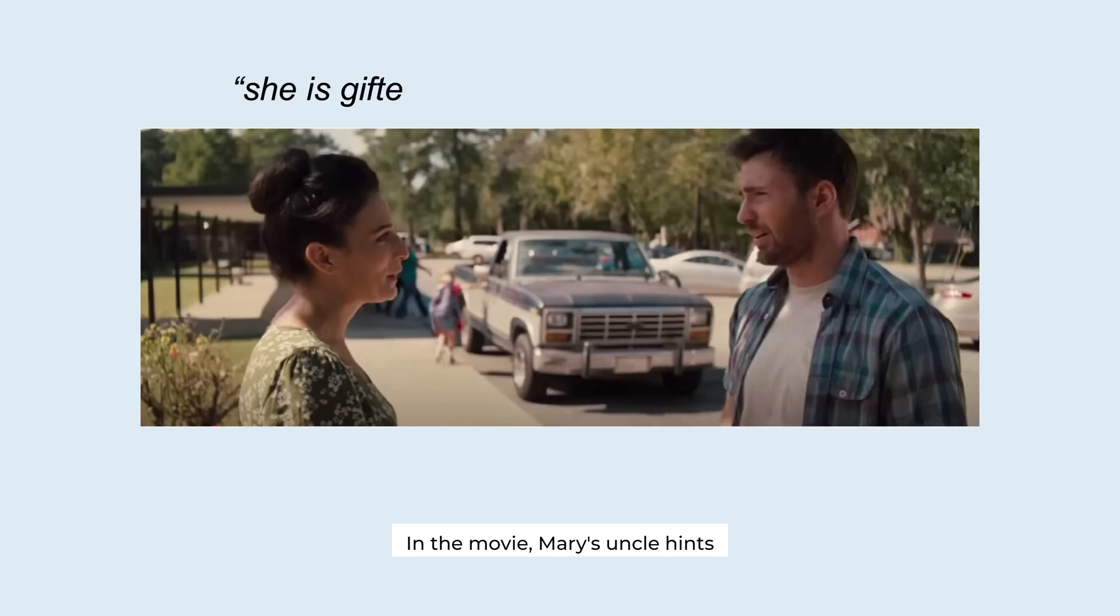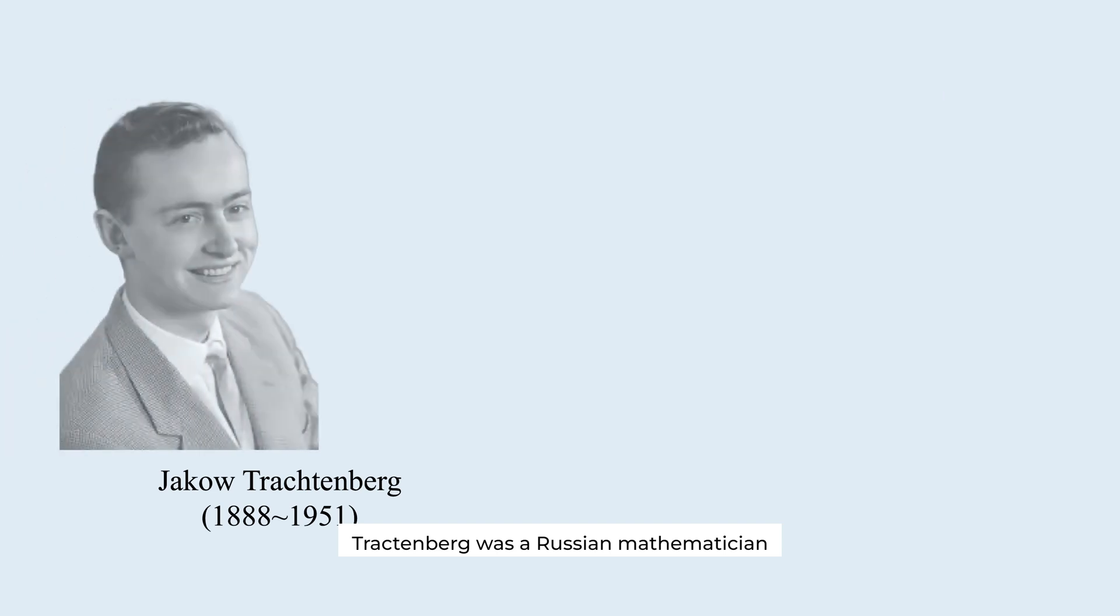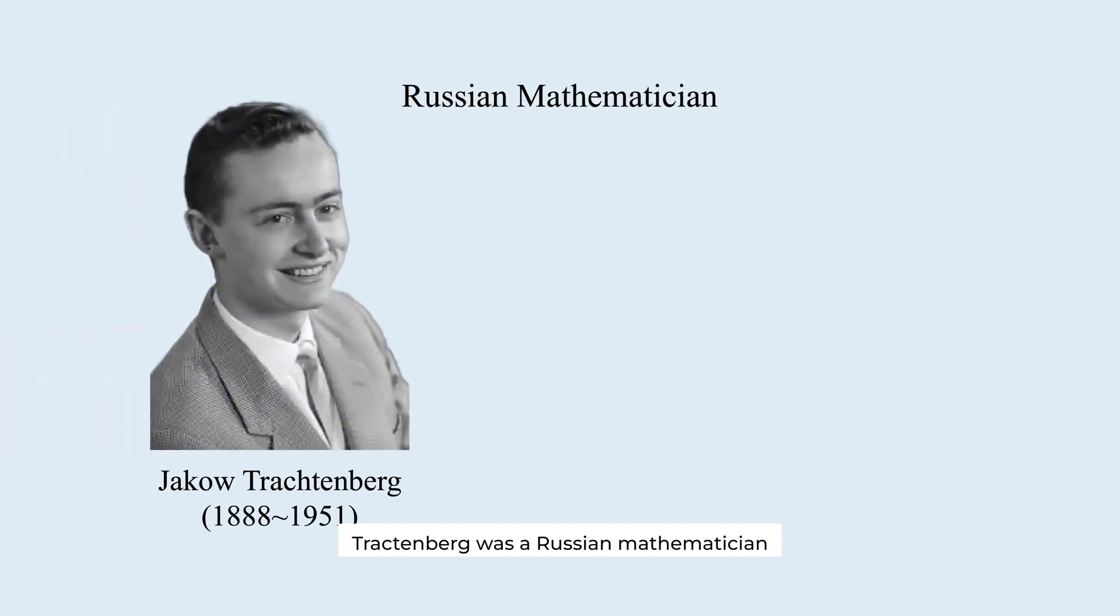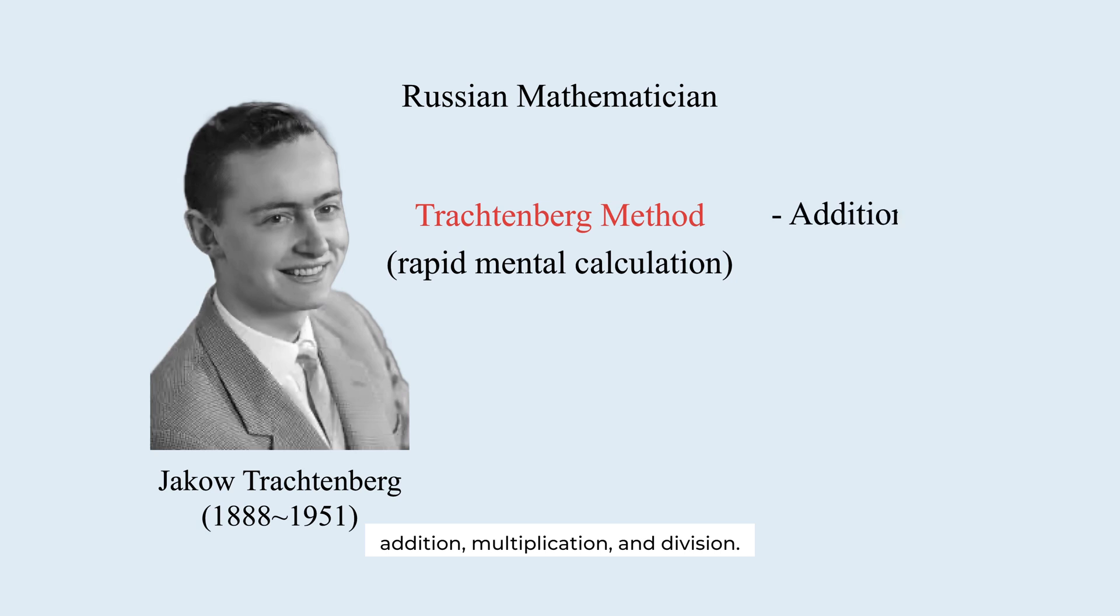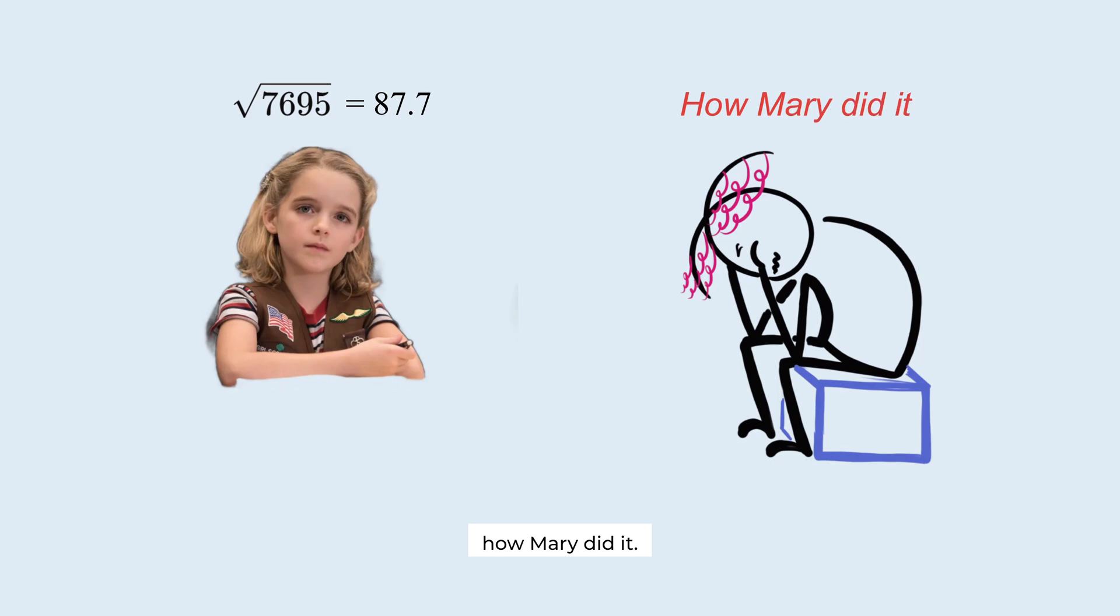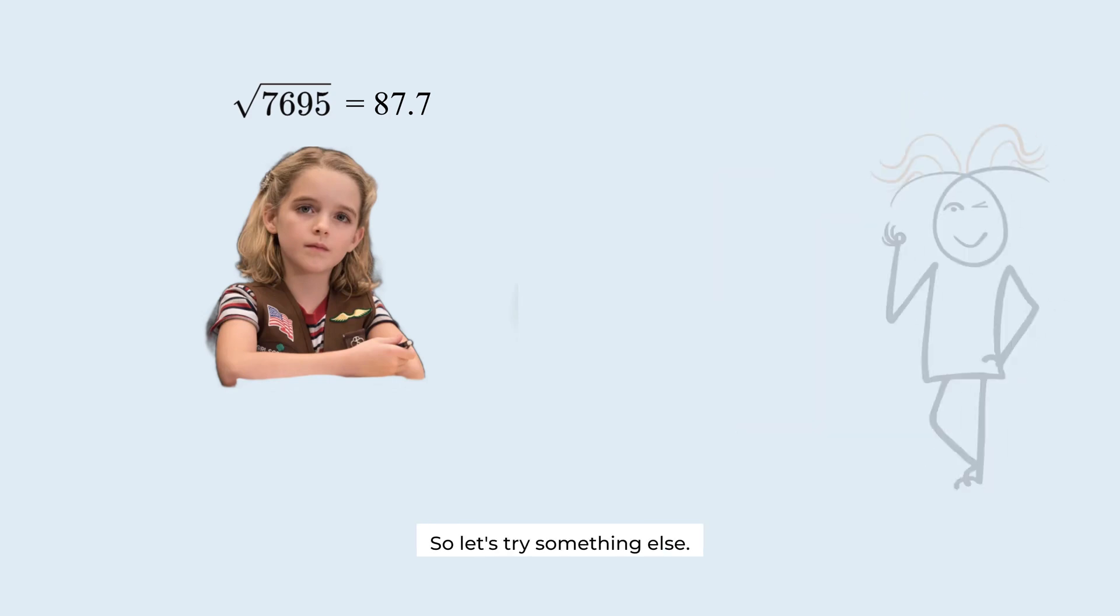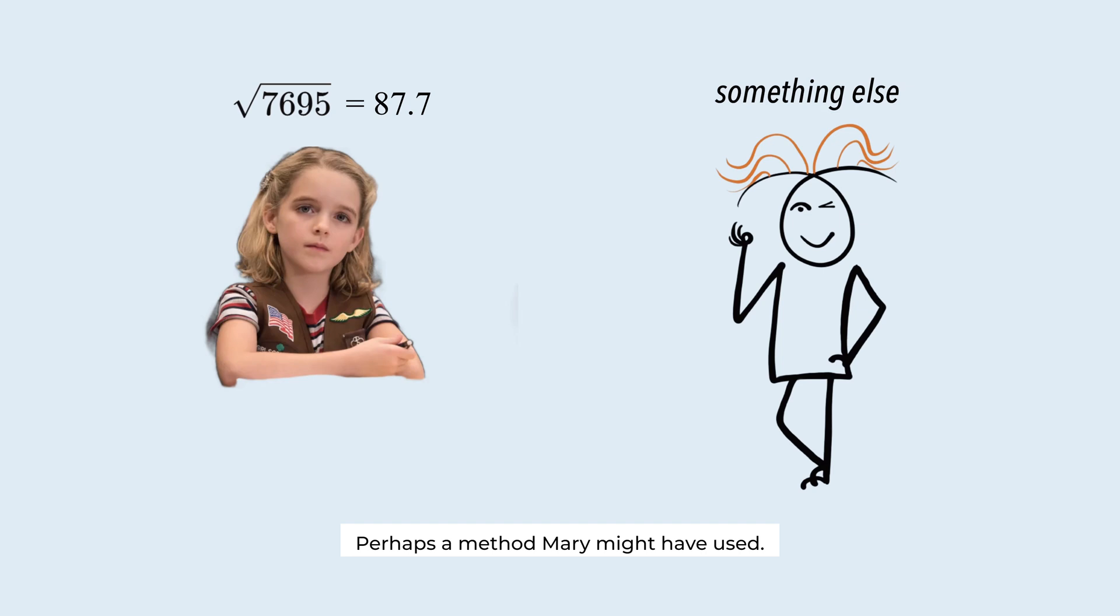In the movie, Mary's uncle hints that she learned Trachtenberg method. Trachtenberg was a Russian mathematician who came up with clever shortcuts for things like addition, multiplication, and division. But as far as I know, he didn't develop a technique for finding square roots. Which means we don't exactly know how Mary did it. So, let's try something else. Perhaps a method Mary might have used.